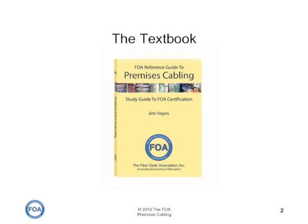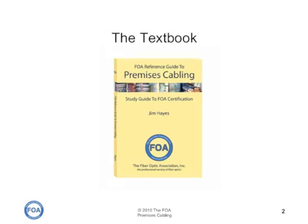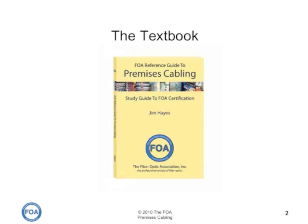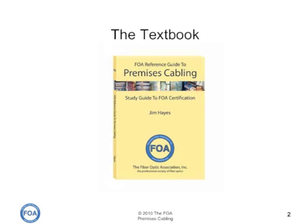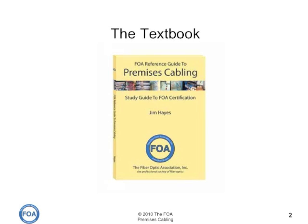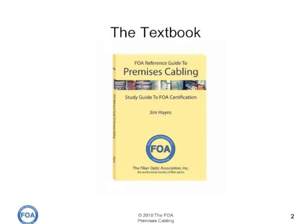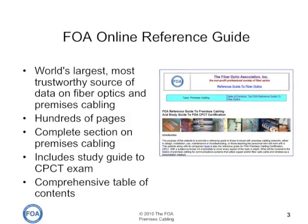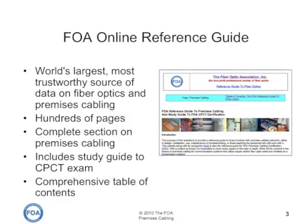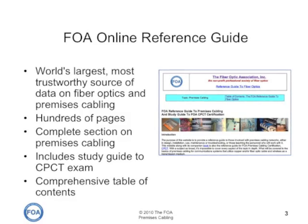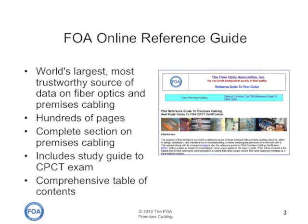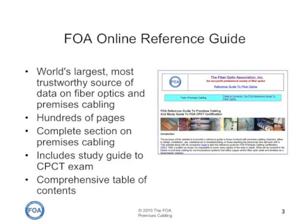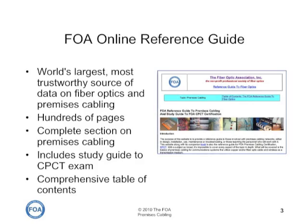The FOA has published a textbook on premises cabling called the FOA Reference Guide to Premises Cabling. You can get a copy of this book from Amazon or most online or brick-and-mortar booksellers. We also have an extensive section on premises cabling in the FOA Online Reference Guide, which you can find from a link on the FOA homepage, www.thefoa.org.